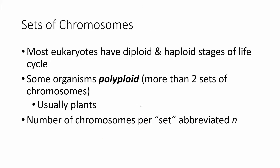Most eukaryotes we talk about will have diploid and haploid stages of life. We as animals tend to have a primarily diploid life cycle. Fungi will tend to spend most of their time in a haploid life cycle, and some plants will spend half their time as diploid and half as haploid. We'll talk about this concept of ploidy — diploid versus haploid — on another slide.